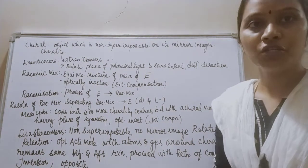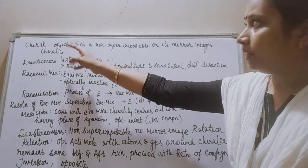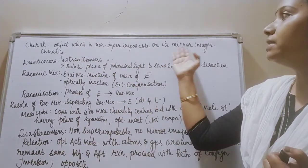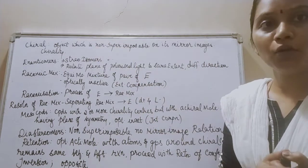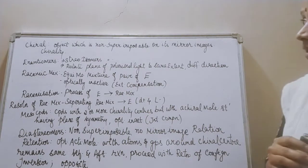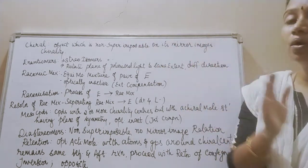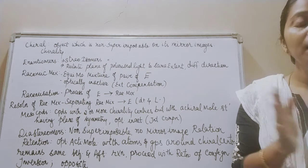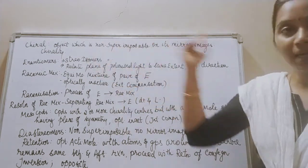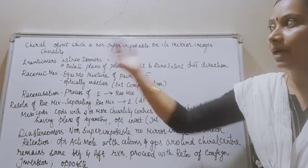Moving to the next definition: chiral. What is chiral? Chiral is nothing but a property. Suppose I have an object — this object is non-superimposable on its mirror image. Then I am going to call that object a chiral object, and this property is called chirality. Chirality is a property by which an object is non-superimposable on its mirror image. Particles or objects which exhibit the property of chirality are called chiral compounds.